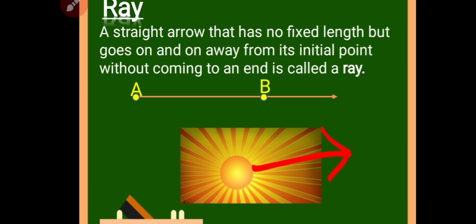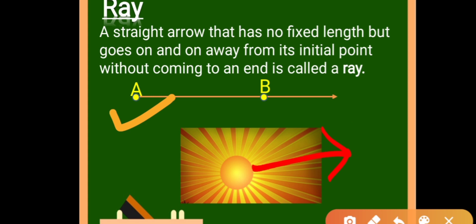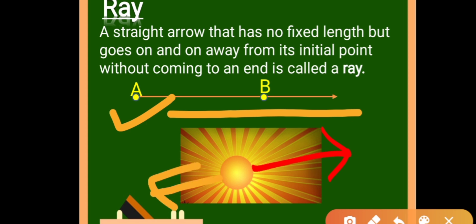What is a ray? A ray is a straight arrow that has no fixed length but goes on and on away from its initial point — the initial point means the starting point. Ray AB is moving in the direction of B. We all know that sun rays fall everywhere in a straight direction starting from the sun. They have no fixed length — that is why they are called rays.